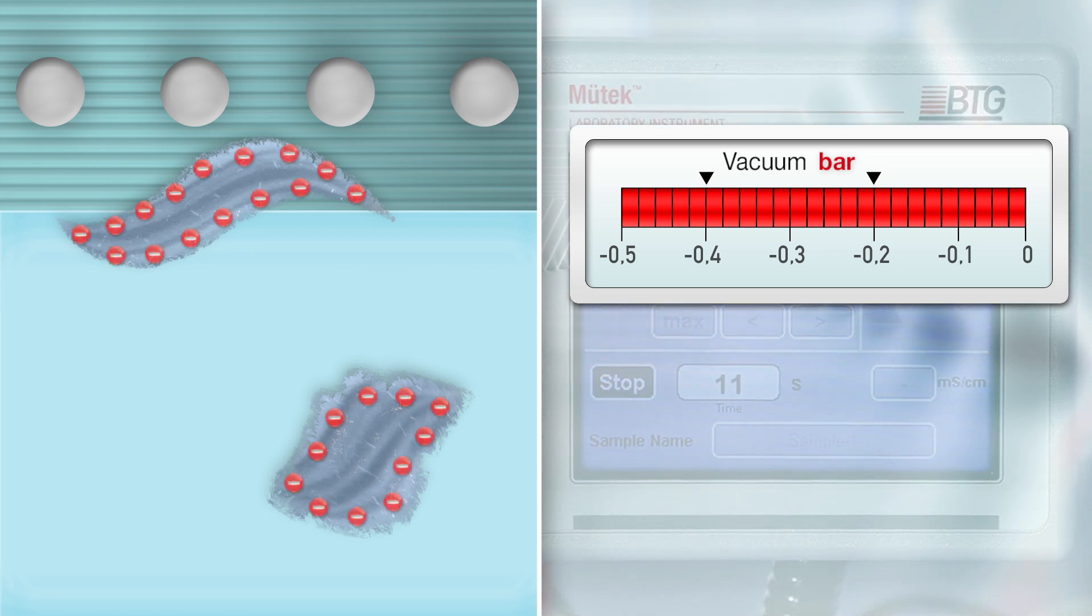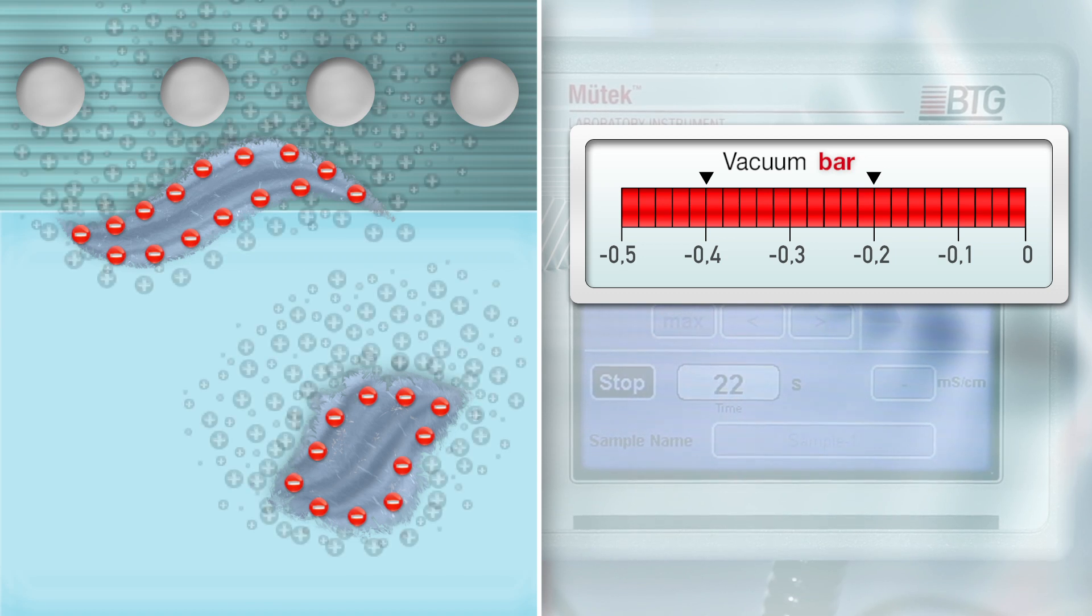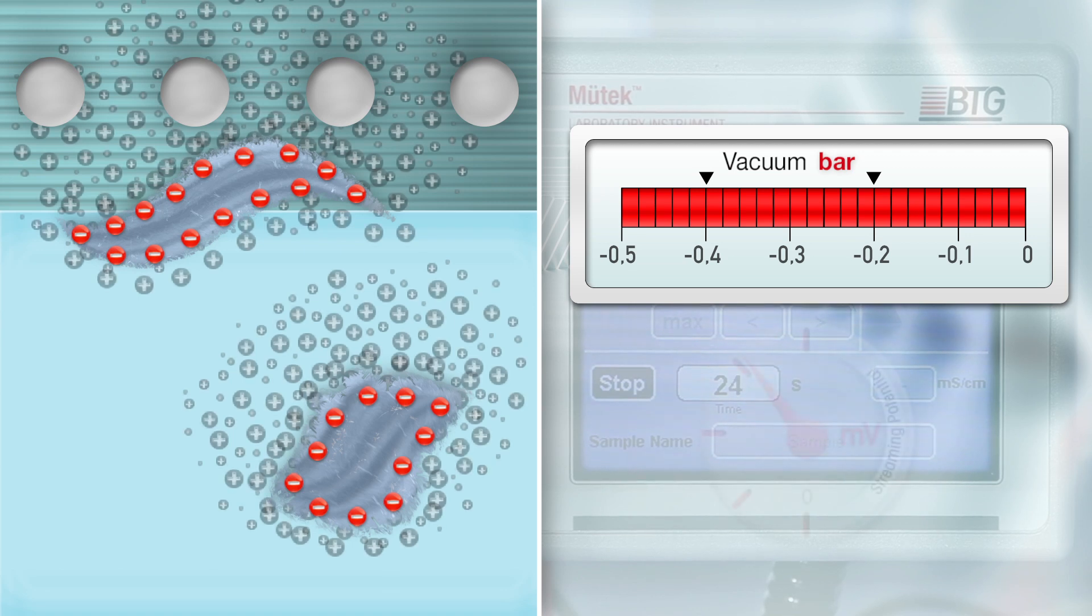This charge has attracted cationic counter-ions from the surrounding liquid, thus establishing an electrical double layer.